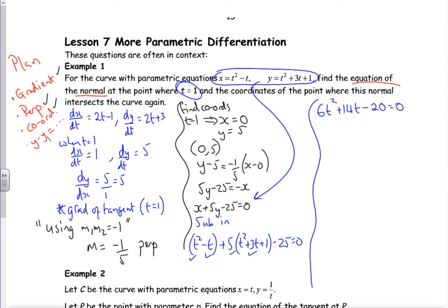I've got 5 times 1 is 5 take 25 is minus 20 equals 0. I could divide through by 2 but then I'm going to put it in polynomial anyway. If I put it in polynomial I get t is 1, which I've got, and I've got t is minus 10 over 3. It's a messy fraction but it does the trick. So I need the coordinates.